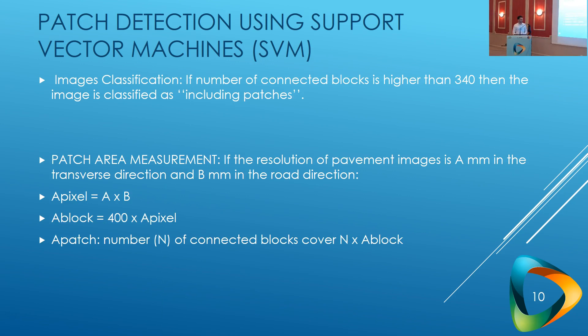A few more details about how the algorithm works. For image classification, we set a threshold: if the connected patch blocks are above this threshold, then the image includes a patch. For patch area measurement, since we know the resolution of our frames, we know what area a pixel represents. So if you know the area for one pixel, you know the area that a 20 by 20 pixel block represents, and from the connected blocks you can find the total area of the patch.